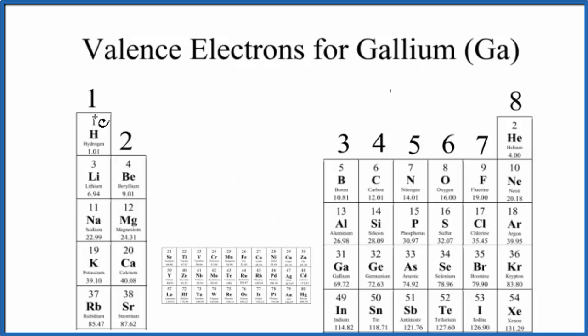In the first group on the periodic table, all of these elements have one valence electron. Second group, they have two. We skip the transition metals, and then from group 13 to group 18, we have three through eight valence electrons.